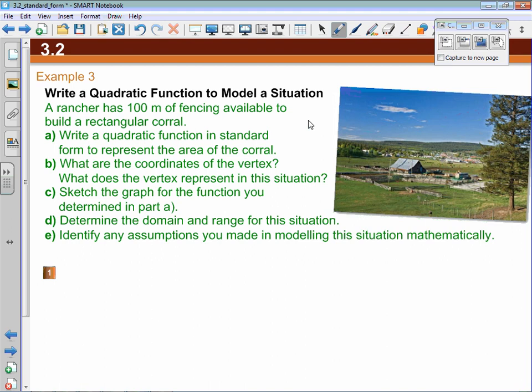It says that a rancher has 100 meters of fencing available to build a rectangular corral. So nice right angles. I'm just going to draw, it'll look roughly squarish, but that's OK. And we know, and this is important, that because we have 100 meters of fencing, the perimeter of that fence is equal to 100 meters.